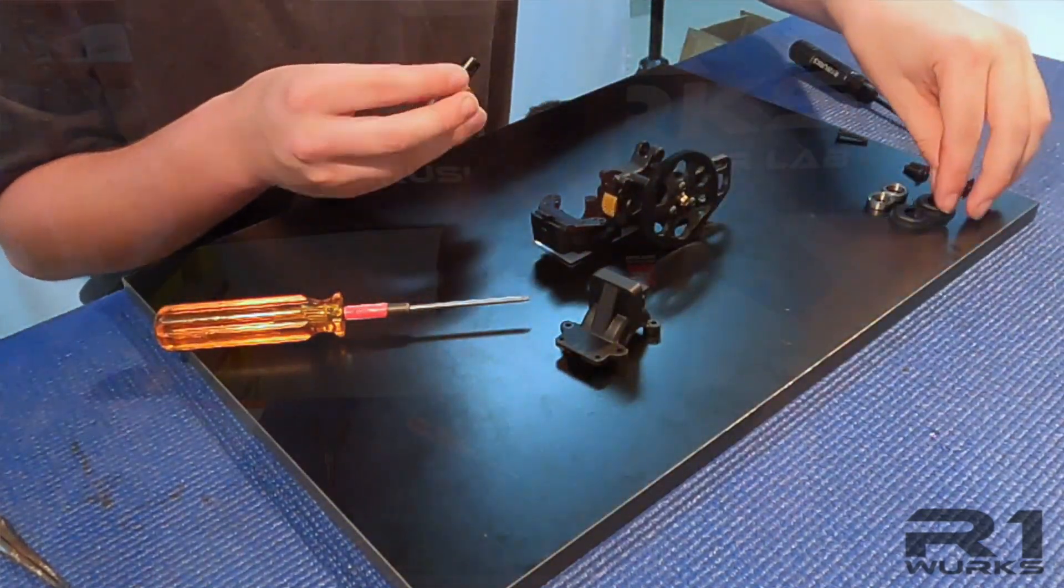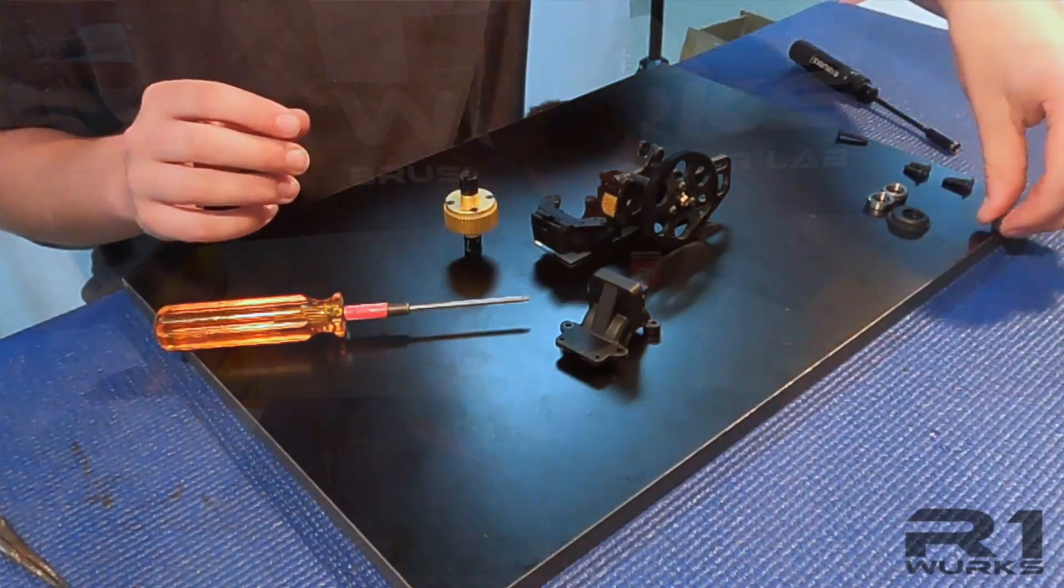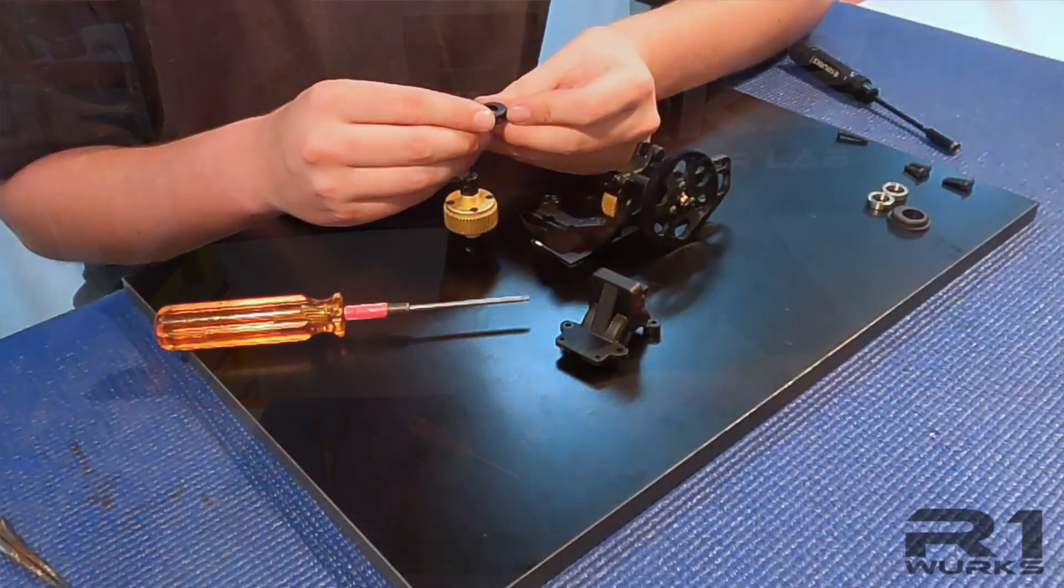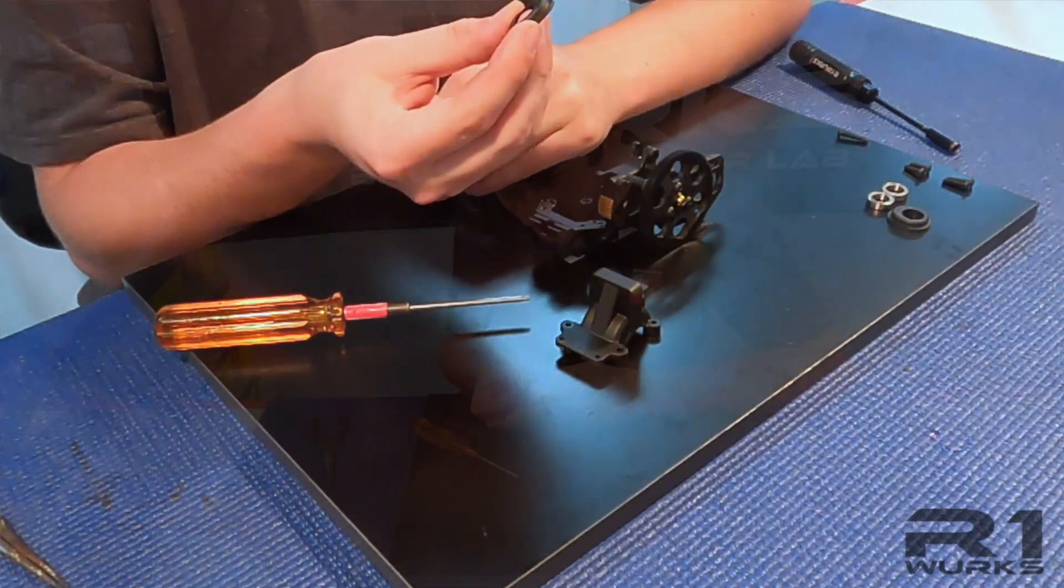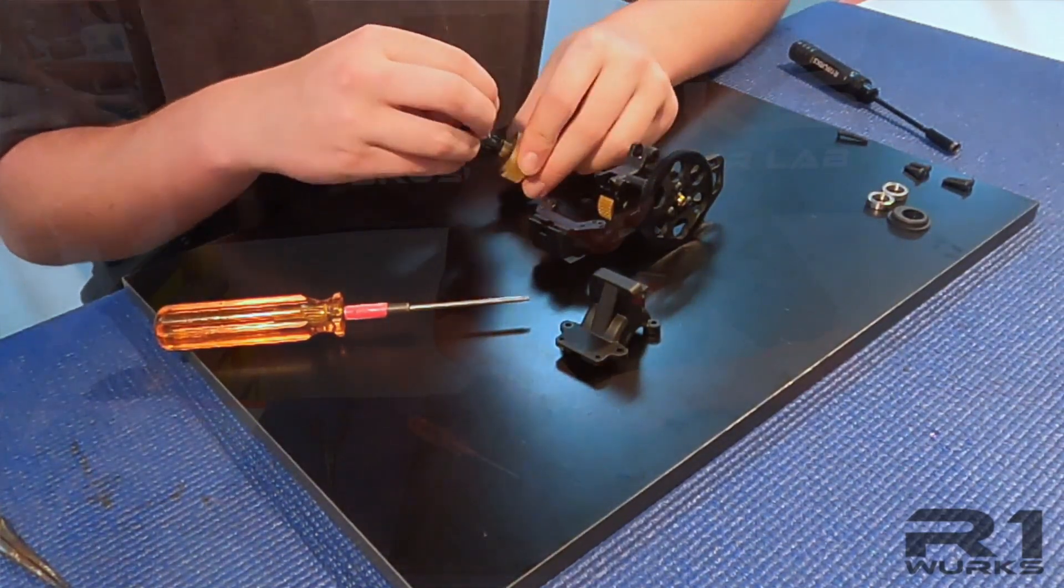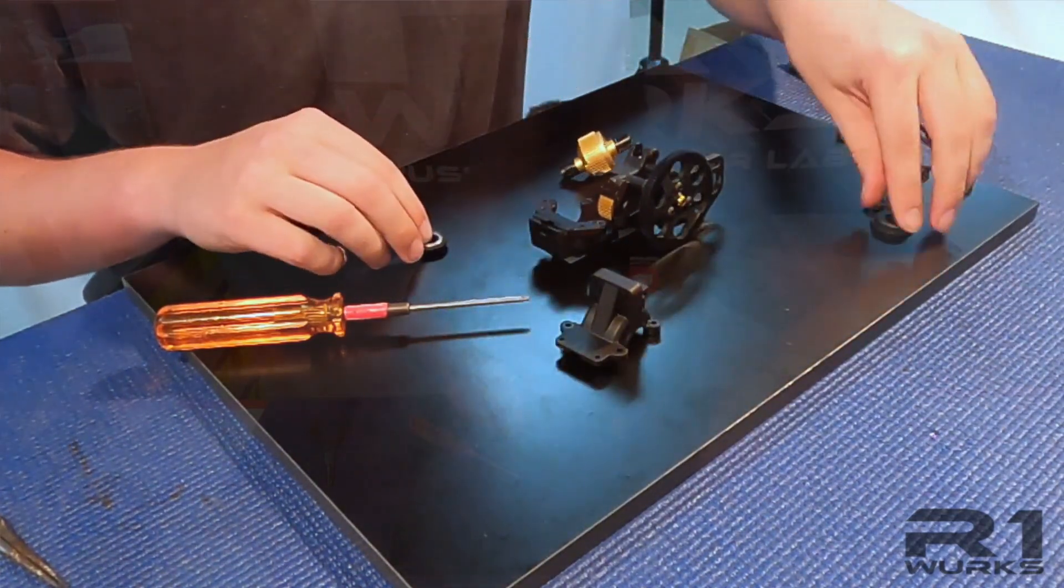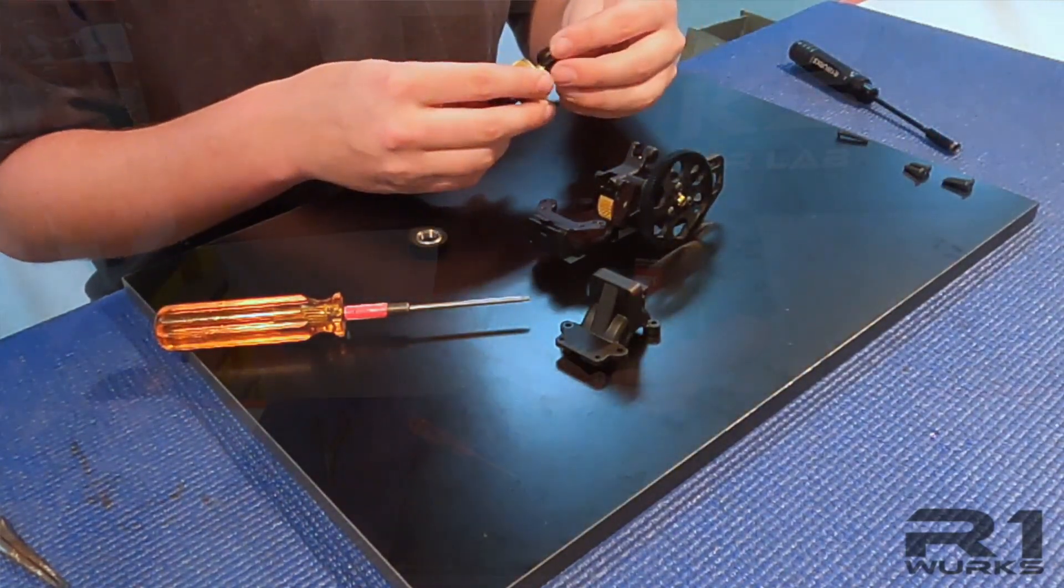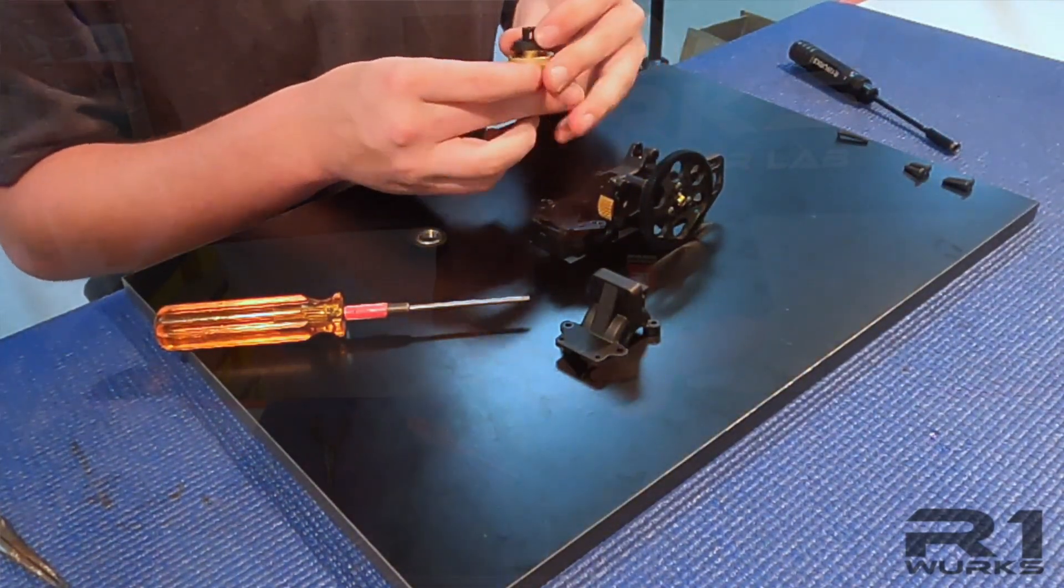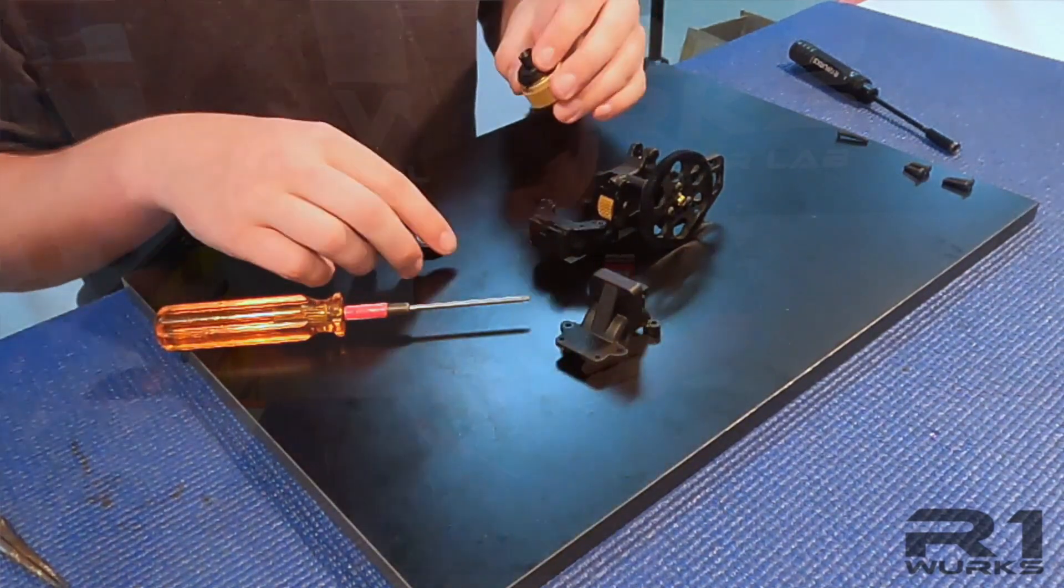And then I am going to put the diff height insert on. So basically it seems like everybody has been running the highest diff height. So it is the 0-3 insert. And you want to make sure that these are the same on both sides. Pop the bearings in. This is how you want to orient it. You want this to the bottom and then the smaller side to the top.